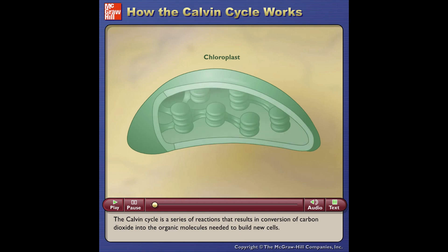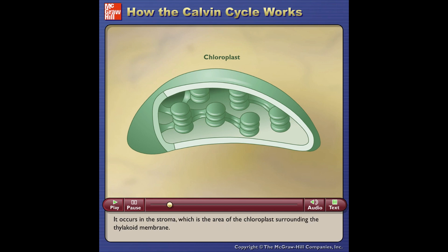The Calvin cycle is a series of reactions that results in the conversion of carbon dioxide into the organic molecules needed to build new cells. It occurs in the stroma, which is the area of the chloroplast surrounding the thylakoid membrane.